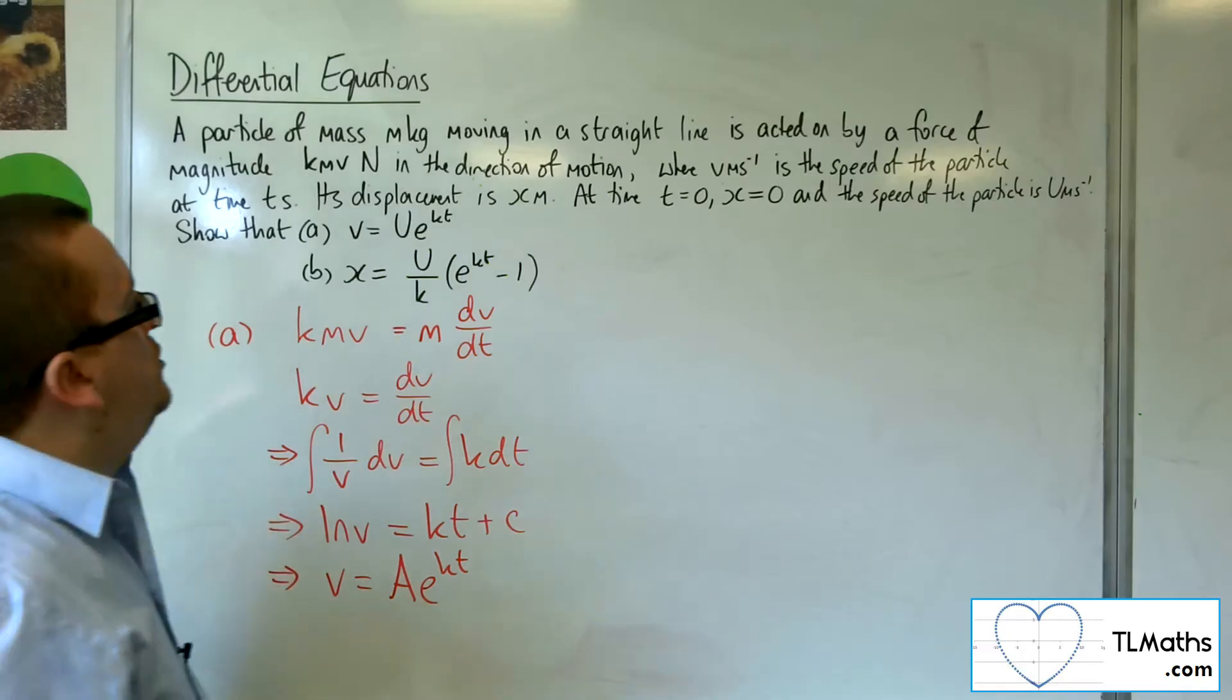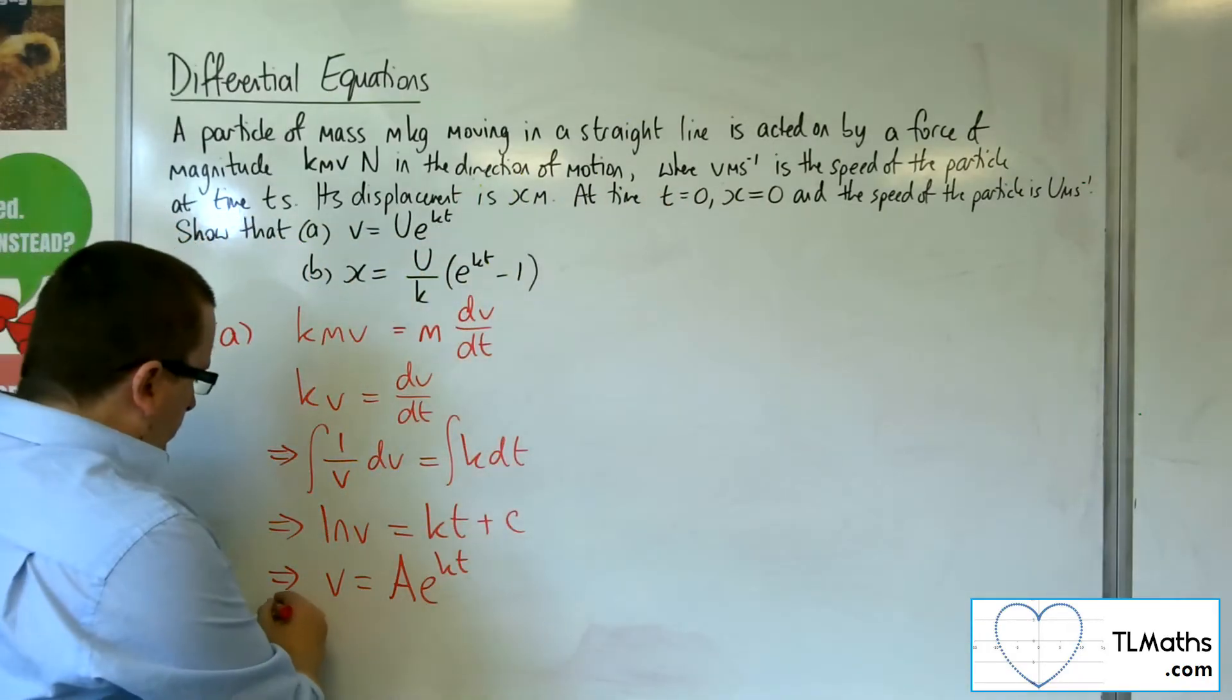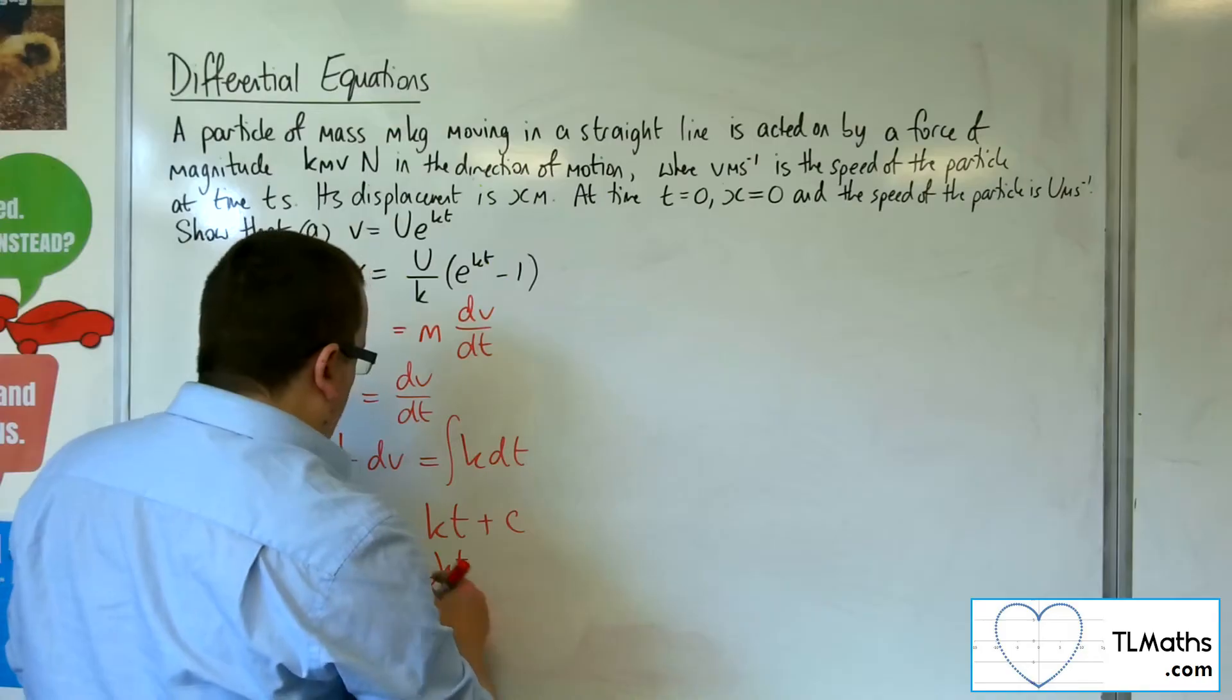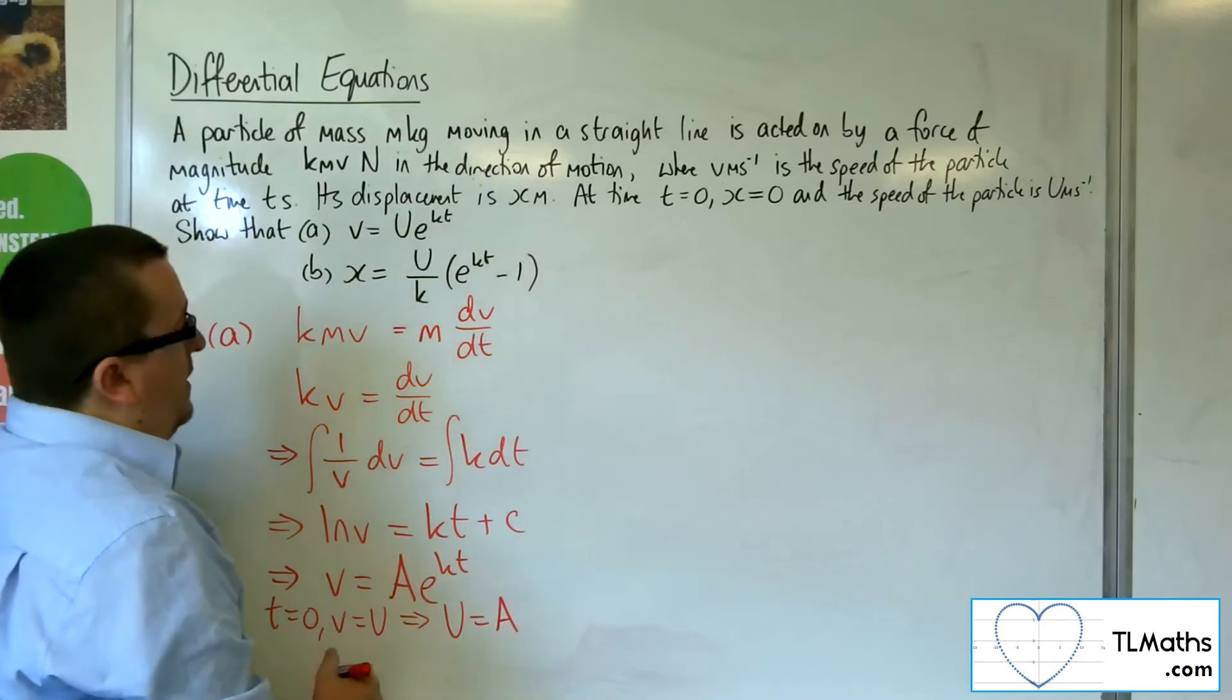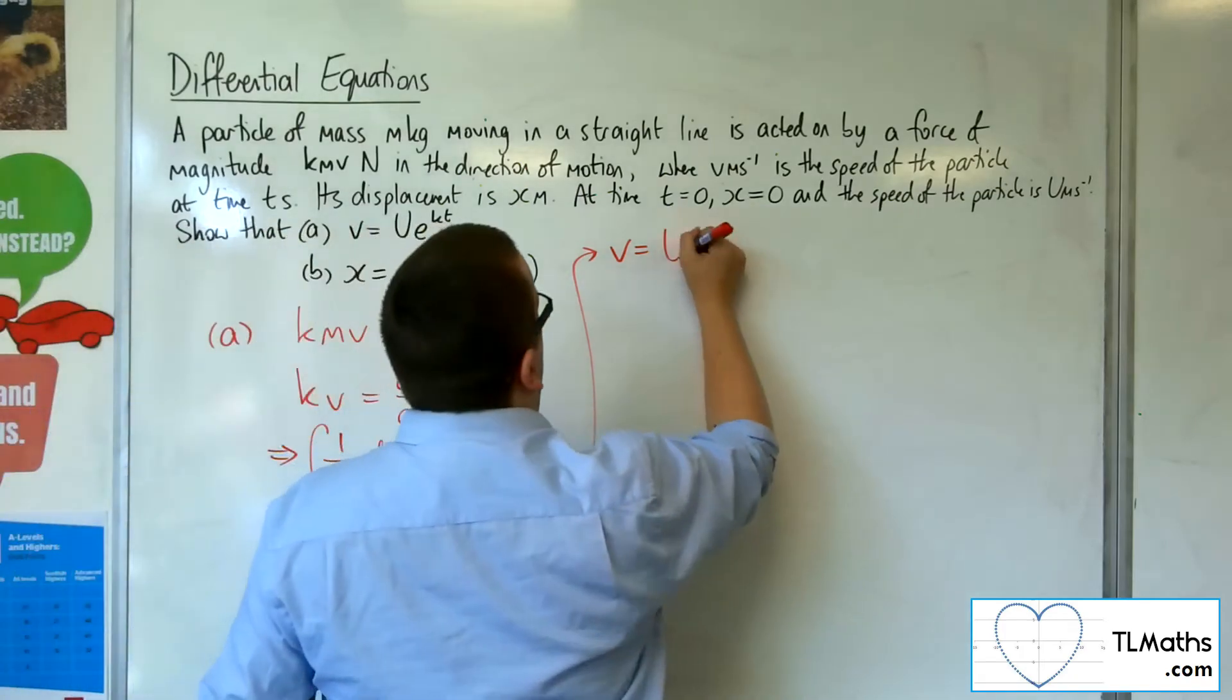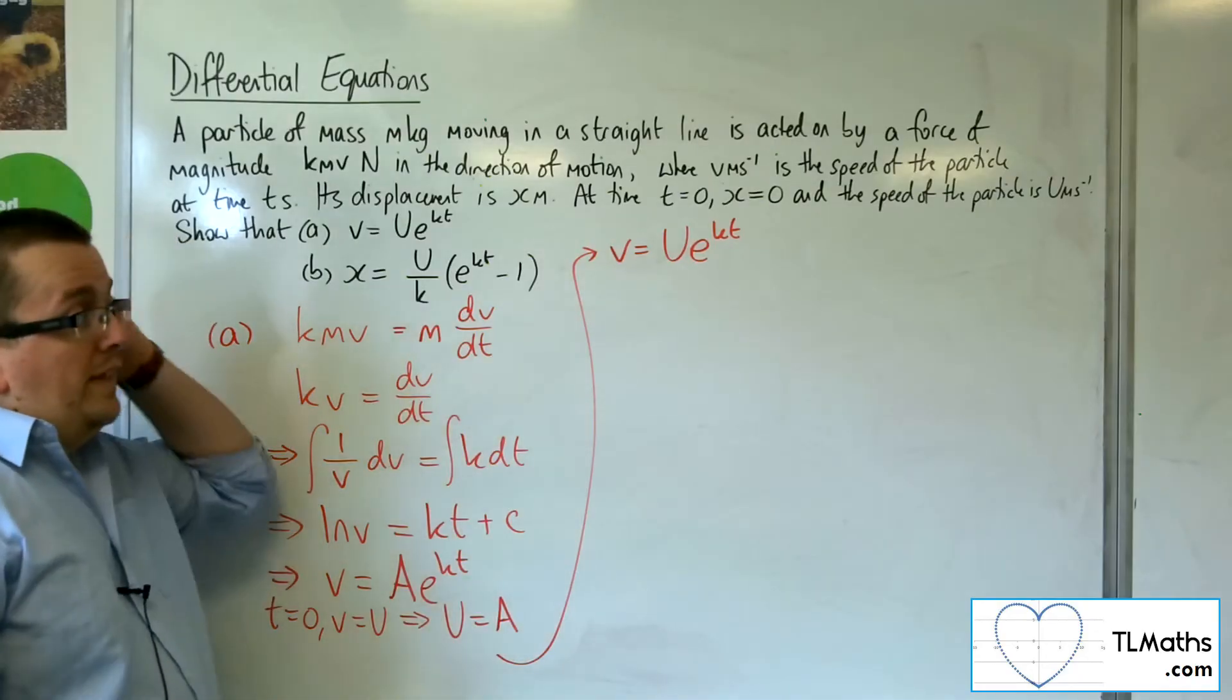Now we can introduce our initial conditions. When t is zero, we know the speed of the particle is u. So when t is zero, v is u, so u equals Ae to the zero, so u is A. That means from that information, we have that v equals ue to the kt, which was precisely what was required. That's our first bit.